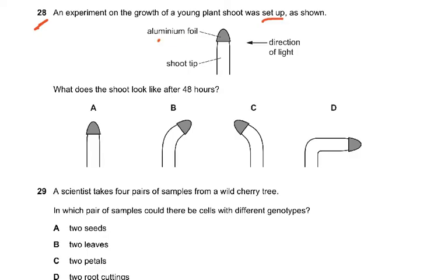Question 28: An experiment on the growth of a young plant shoot was set up with the shoot tip covered in aluminium foil, with light coming from one side. What does the shoot look like after 48 hours? Since the tip is covered with aluminium foil, it cannot detect the light. The answer is A — the shoot remains straight because it cannot perceive the light.